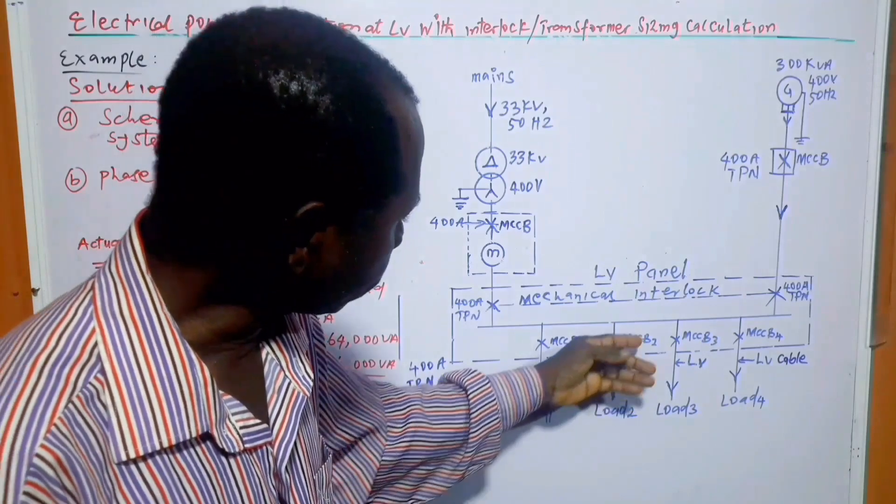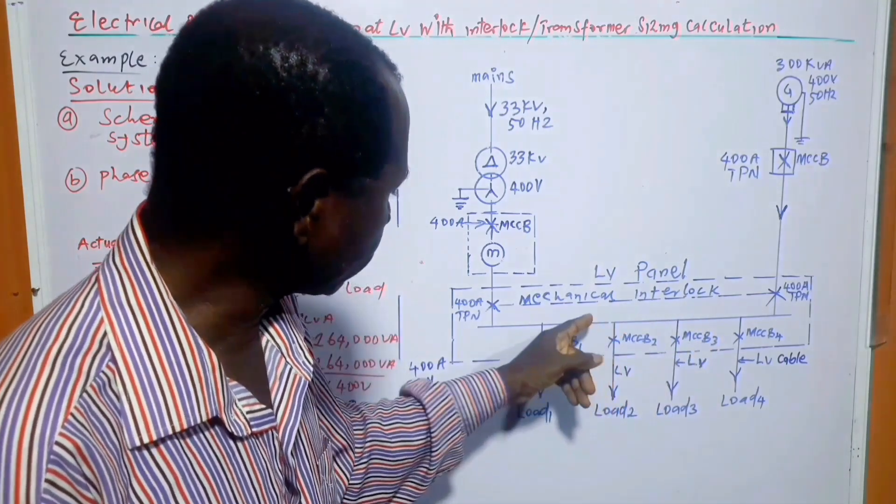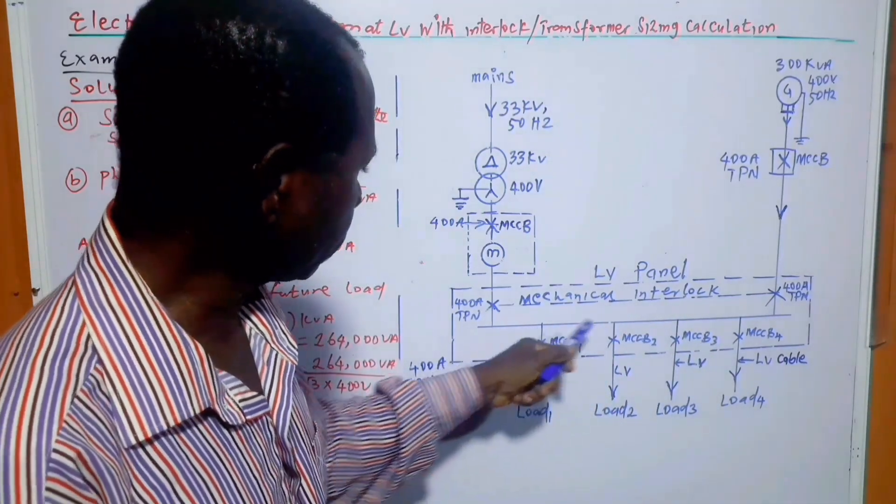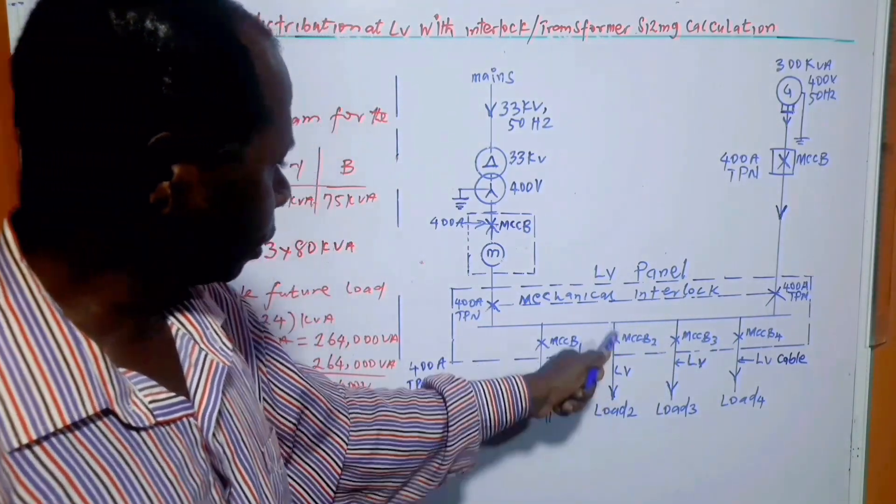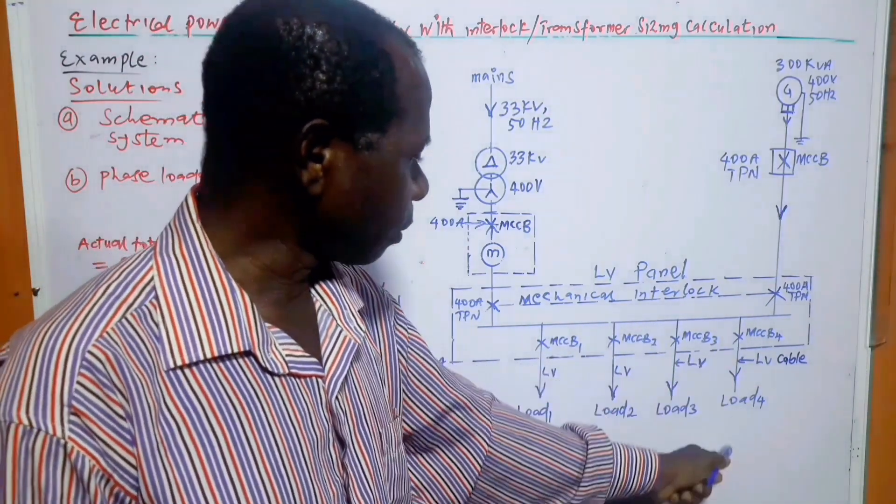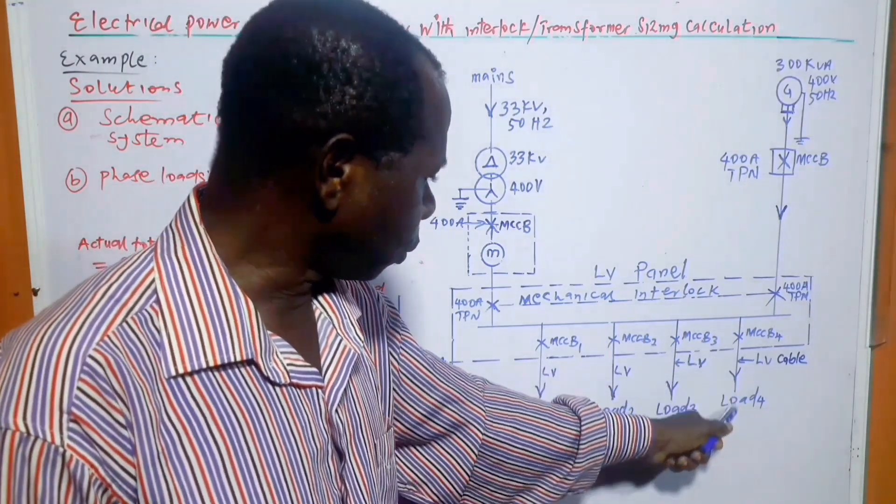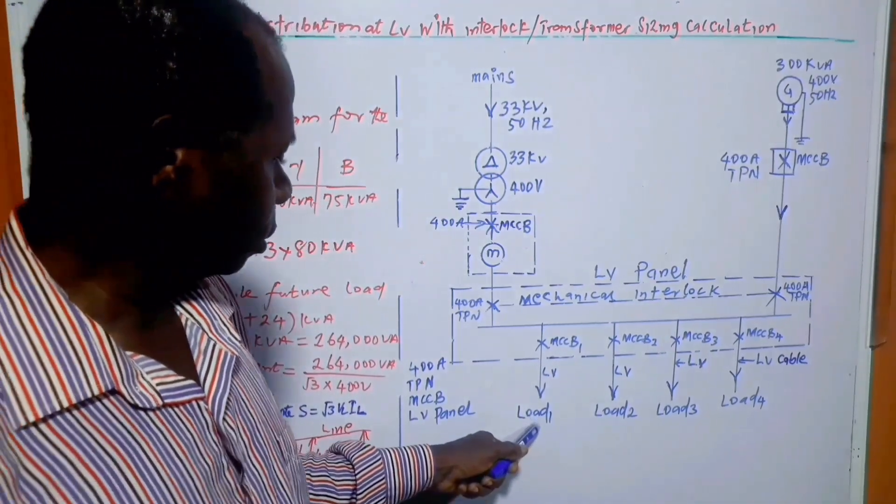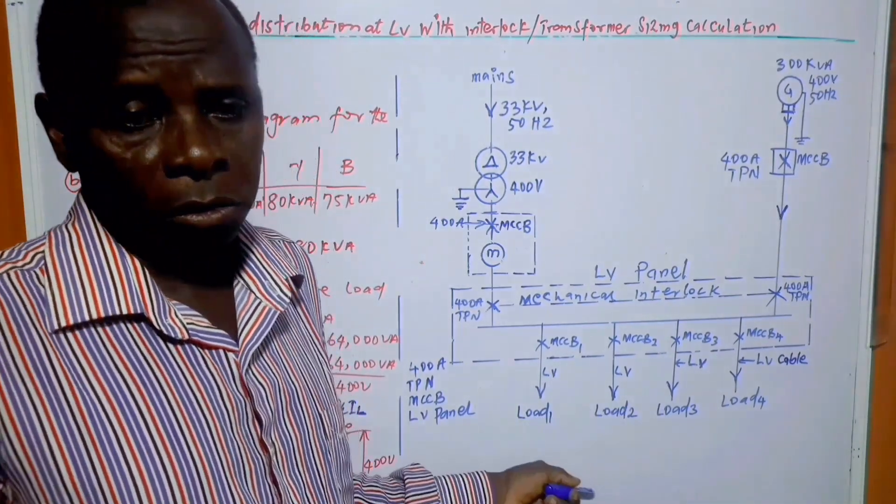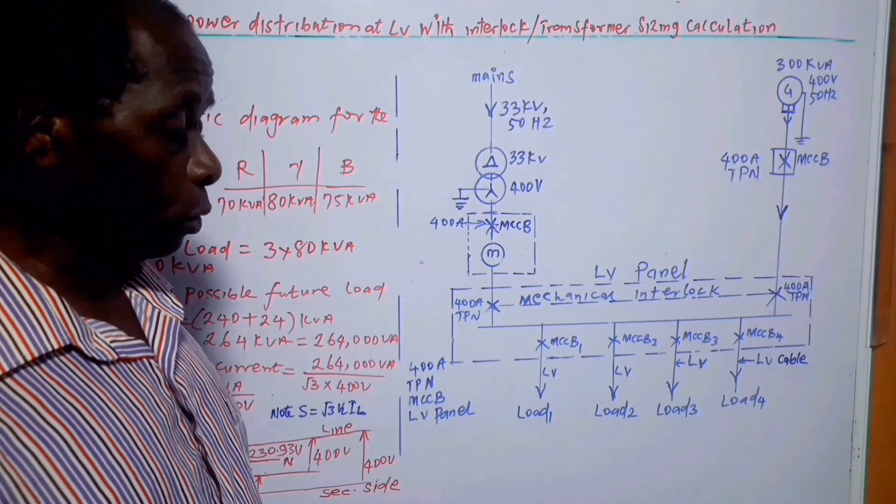And from the interlock section, we have the common board section, which is this one, this line. From where we have circuit breakers going to the loads. These loads could be distribution bus or some other kinds of loads.